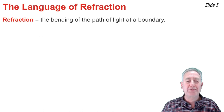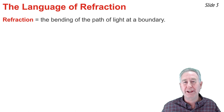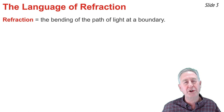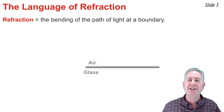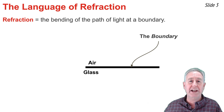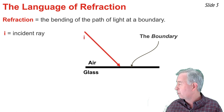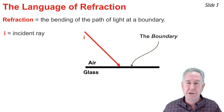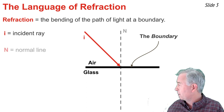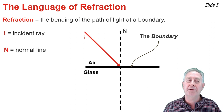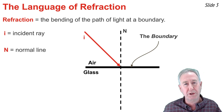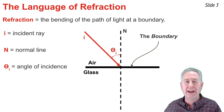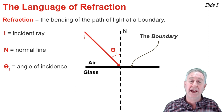When light crosses the boundary between two different materials, there will be a change in speed, a change in wavelength, and a change in direction. This change in direction is what we refer to as refraction. As an example, consider a boundary between air and glass, and suppose that the light is within the air approaching the boundary. This is referred to as the incident ray. At the point of incidence between this light ray and the boundary, we can construct a normal line — a line drawn perpendicular to the surface. The angle between the normal line and the incident ray is the angle of incidence.